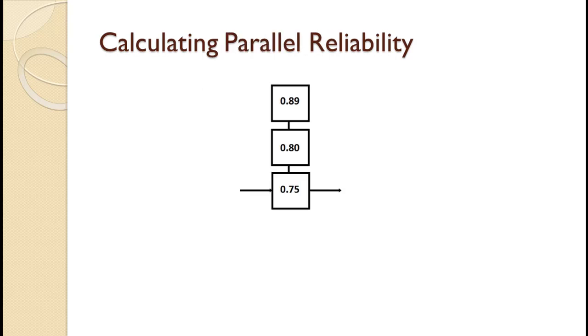With parallel reliability, you can only have a failure if all of the parallel components fail. To calculate parallel reliability, we must compute the probability of a failure of all of the components and subtract that from 1.